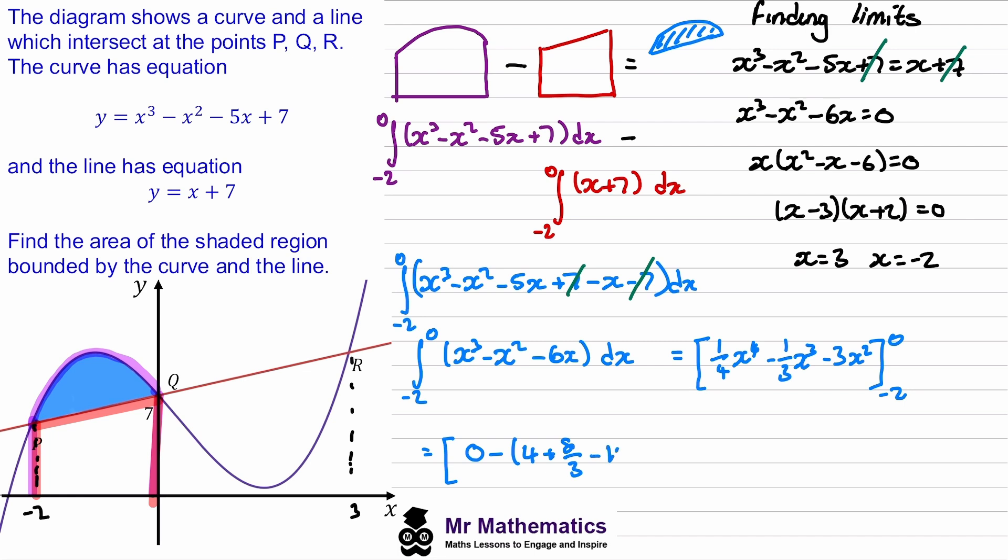When we're working this out we get negative 16 over three, and when you subtract the negative we get a positive. So our blue area will be 16 thirds units squared.